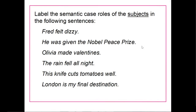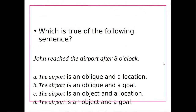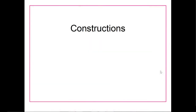For each of these sentences, label the semantic case roles of each subject — what's the role of Fred, he, Olivia, or Rain? Basically, label the semantic case role of the subject in each sentence. There's also another potential quiz or extra credit question: for the sentence 'John reached the airport after 8 o'clock,' determine whether the airport is an oblique and a location, an oblique and a goal, an object and a location, or an object and a goal. That is the end of looking at grammatical relations versus semantic roles.